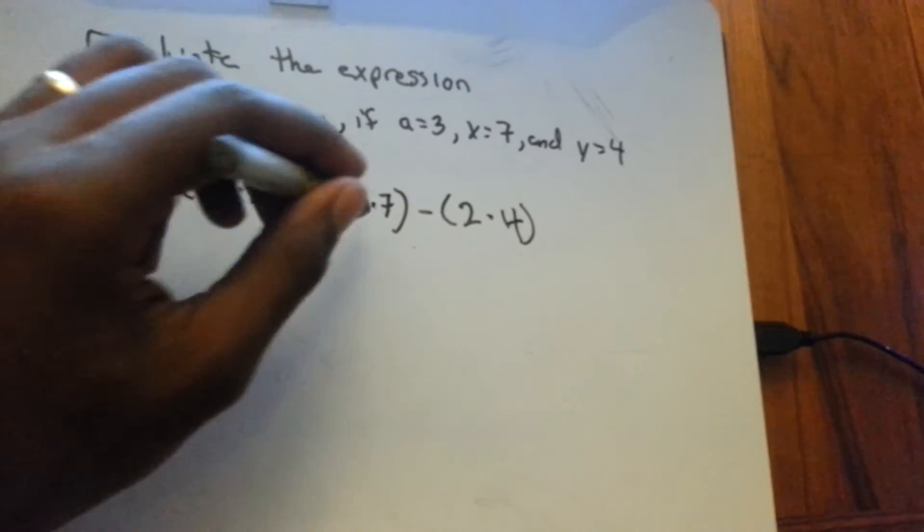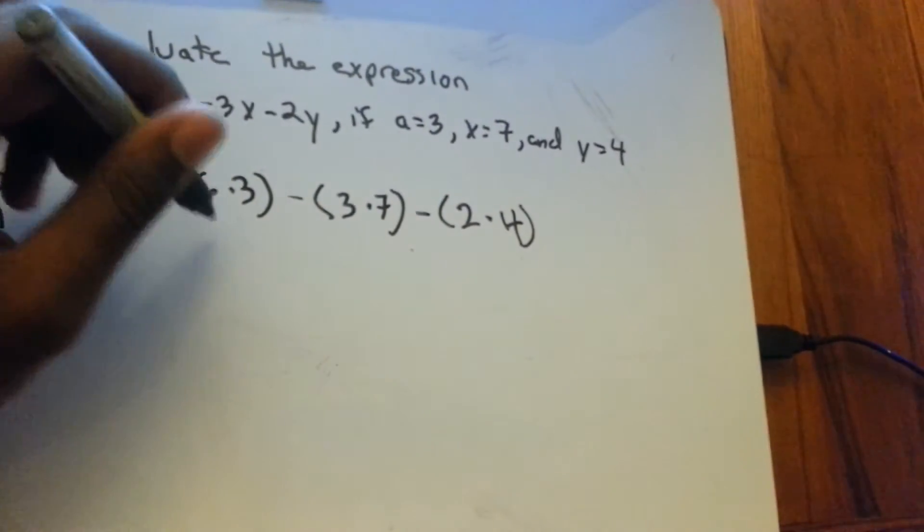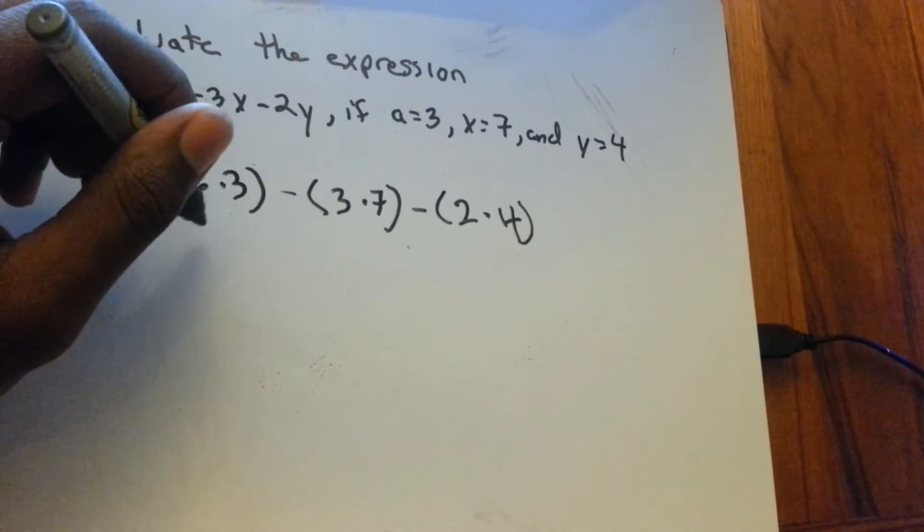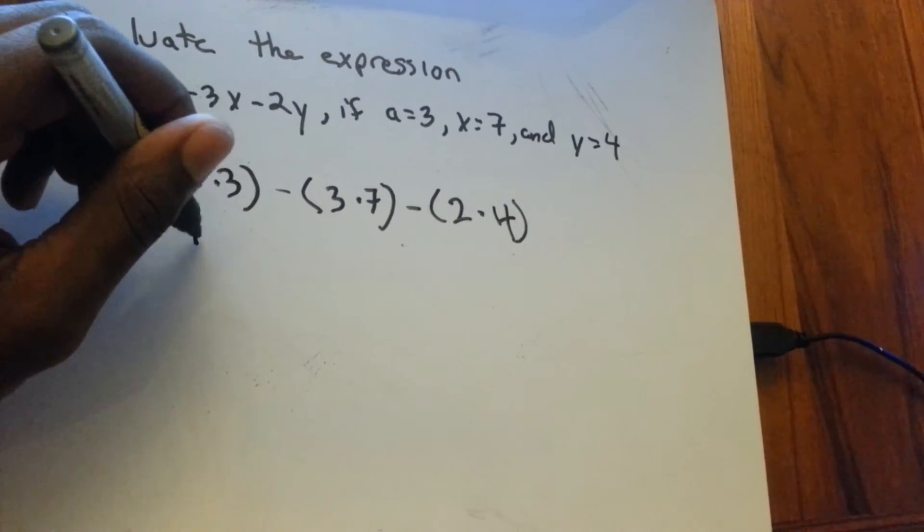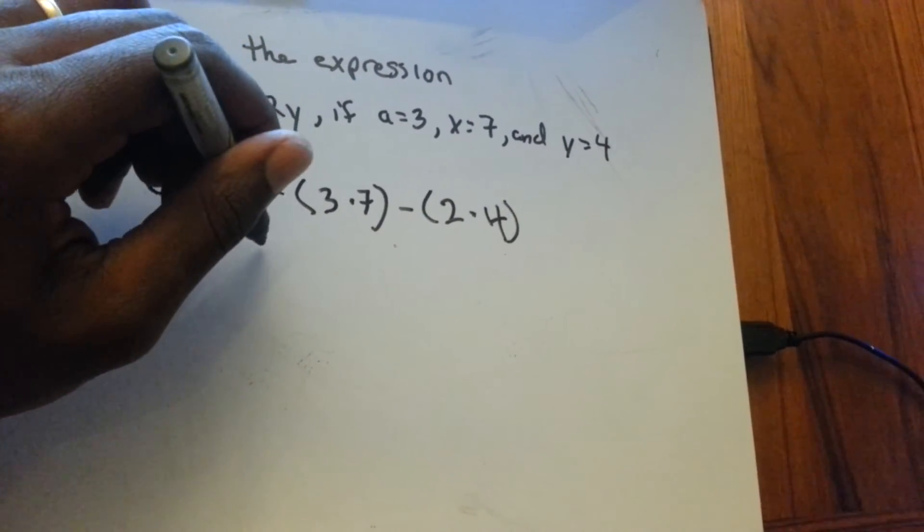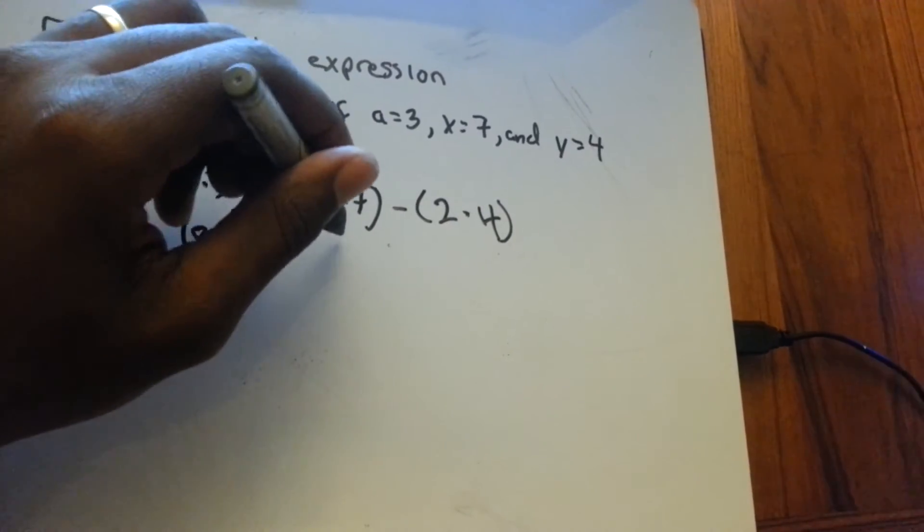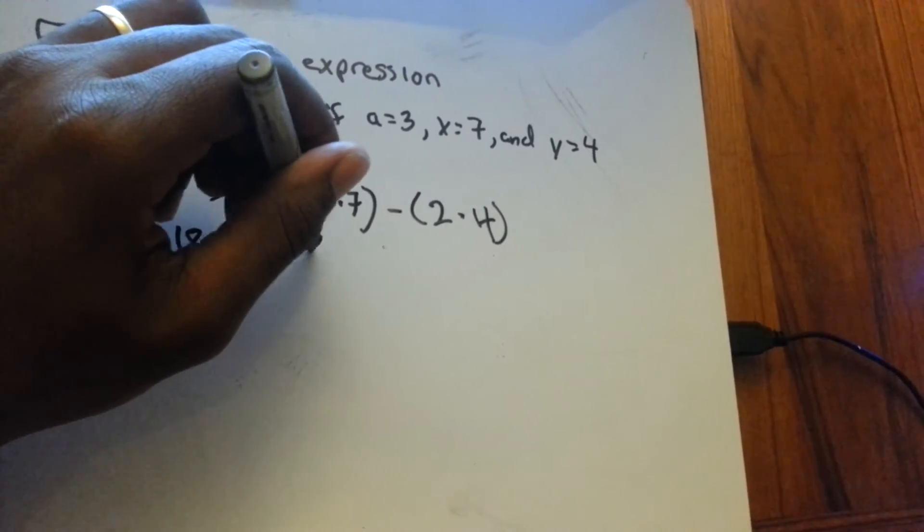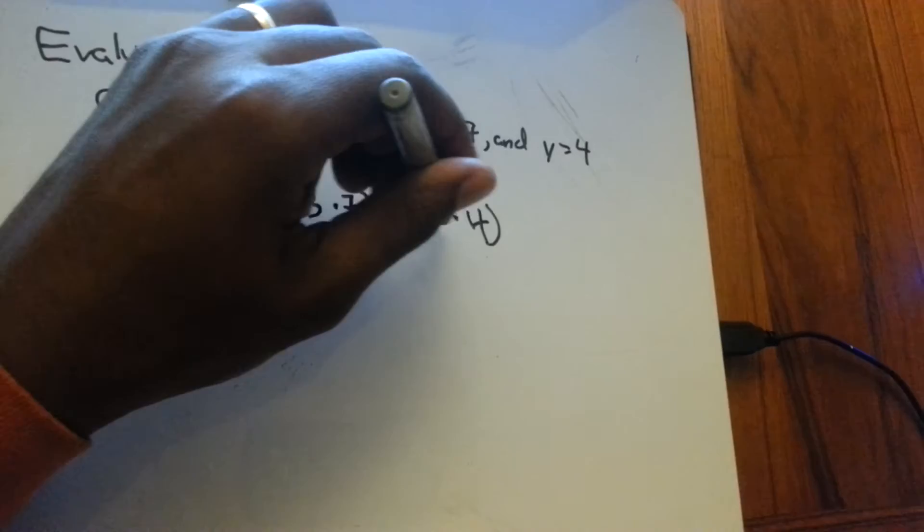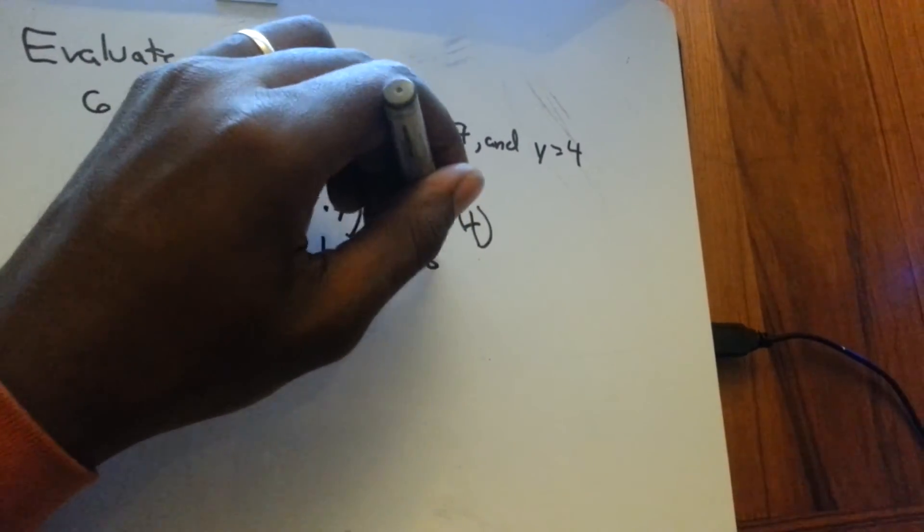And then let's go through and multiply within the parentheses. The order of operations. 6 times 3 is 18, minus 7 times 3 is 21, minus 2 times 4 is 8.